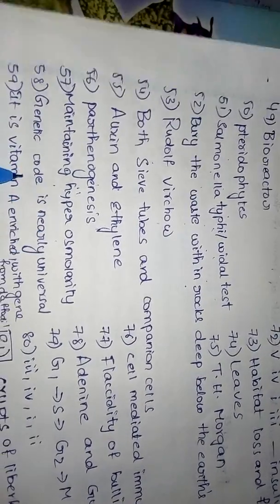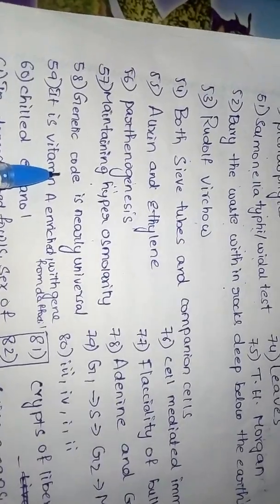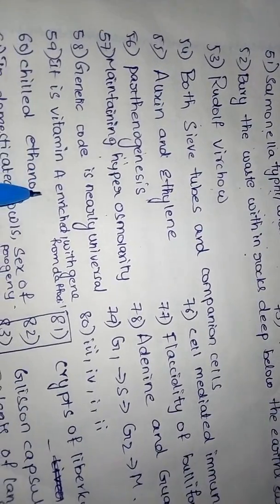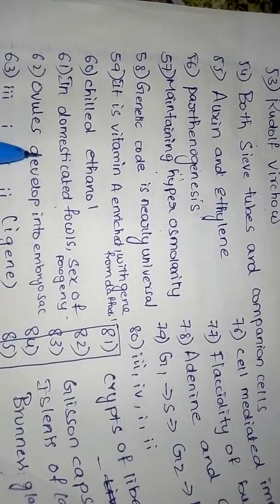Parthenogenesis maintaining hyperosmolality. Genetic code is nearly universal. It is vitamin A enriched rice gene, golden rice, chill, ethanol, indomesticated, false sex of progeny.